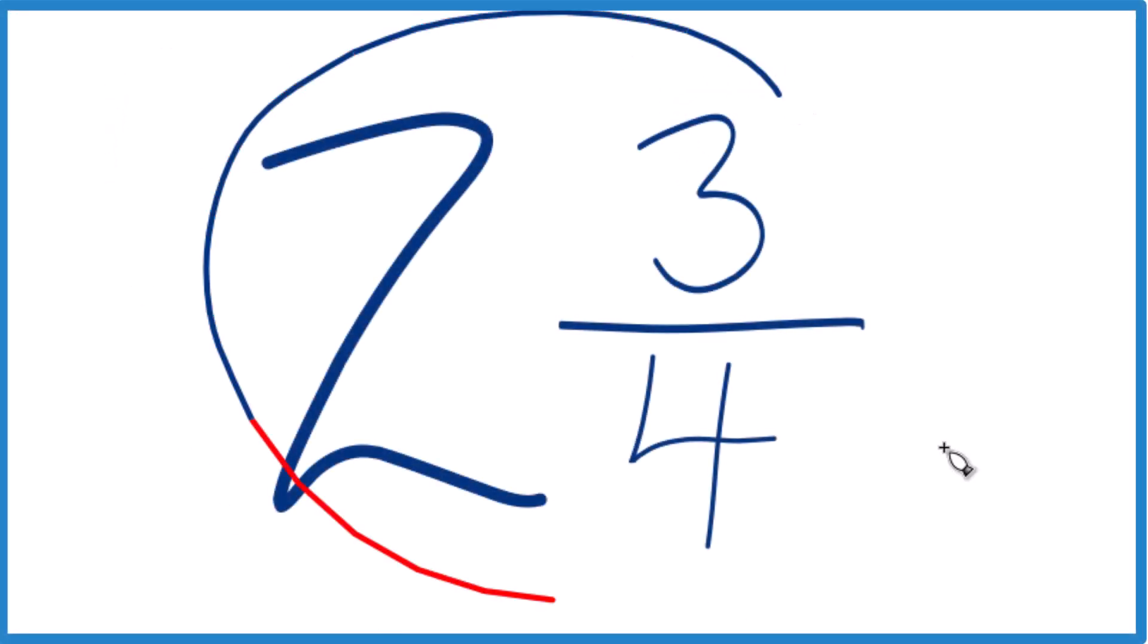Let's write the fraction 2 and 3 fourths as a decimal. And before we get started, the answer is 2.75, and I'll show you why.